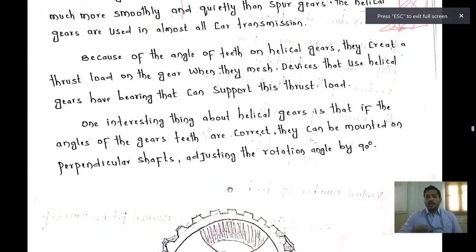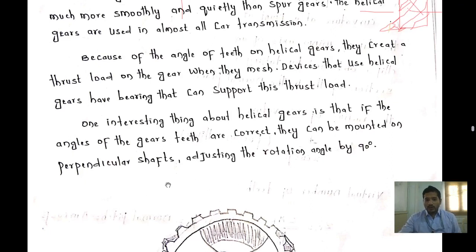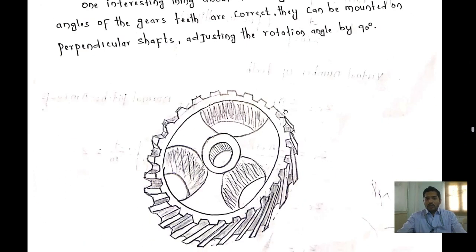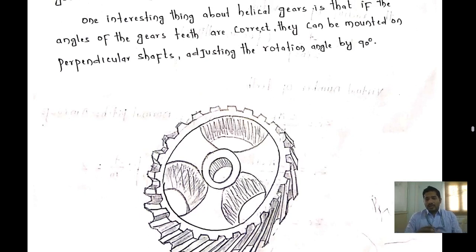Because of the angle of the teeth on a helical gear, they create a thrust load. When the gear contacts another gear — one being the gear and the other the pinion — the helical angle between them produces a thrust load. These gears can be mounted perpendicular to the shaft, adjusting the rotating angle by 90 degrees.